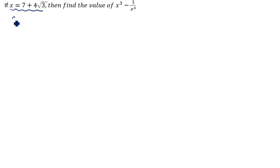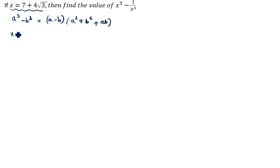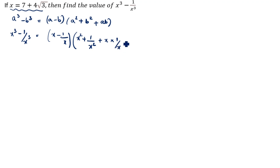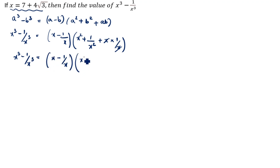What is the formula of a cube minus b cube? It is (a minus b)(a square plus b square plus ab). So x cube minus 1 by x cube: a is x, b is 1 by x. Then a square is x square, b square is 1 by x square, plus x into 1 by x — x and x cancel. So the formula for x cube minus 1 by x cube is: (x minus 1 by x)(x square plus 1 by x square plus 1).